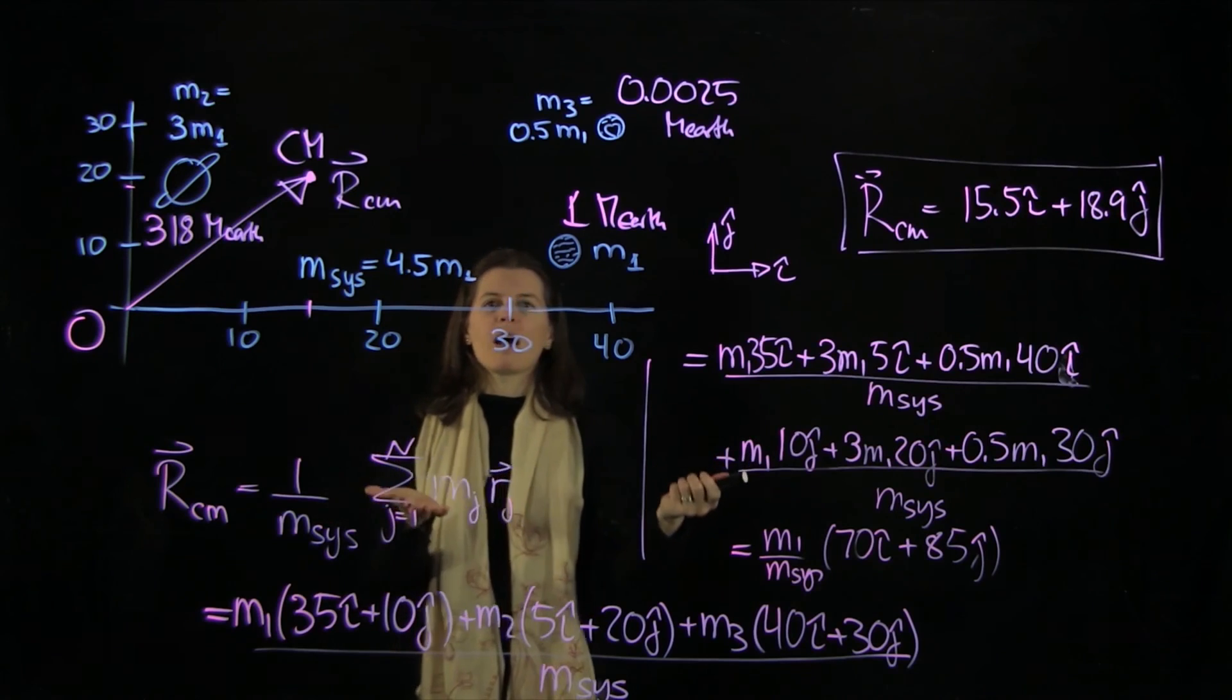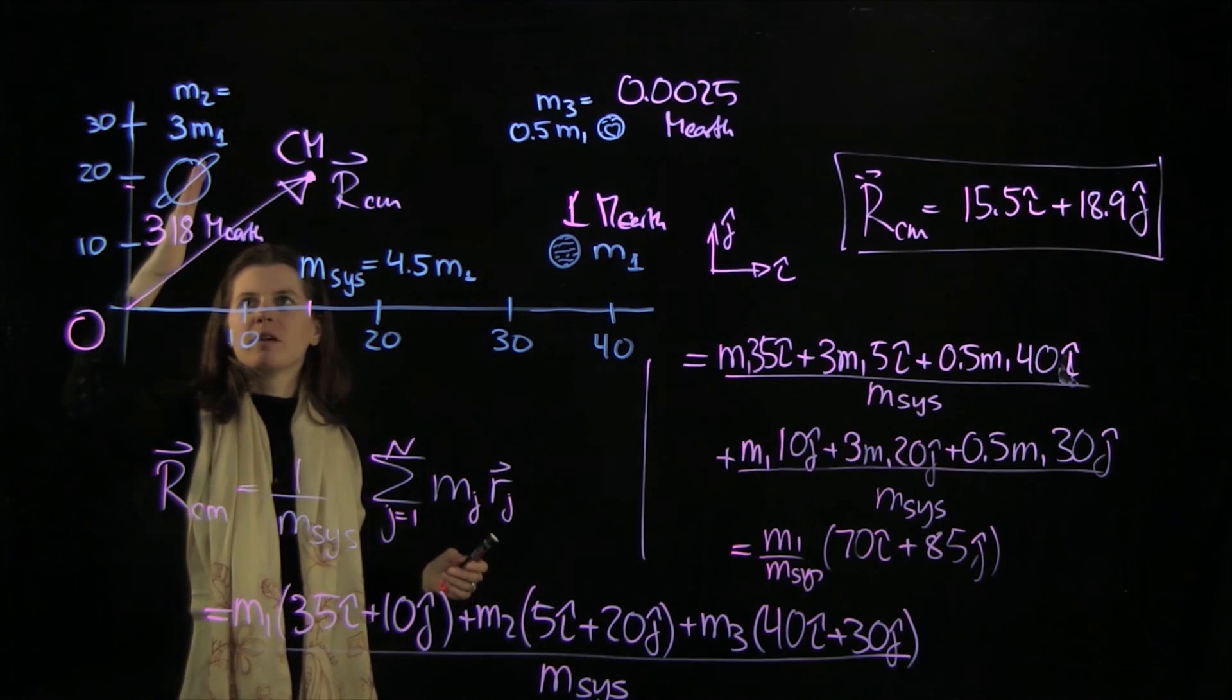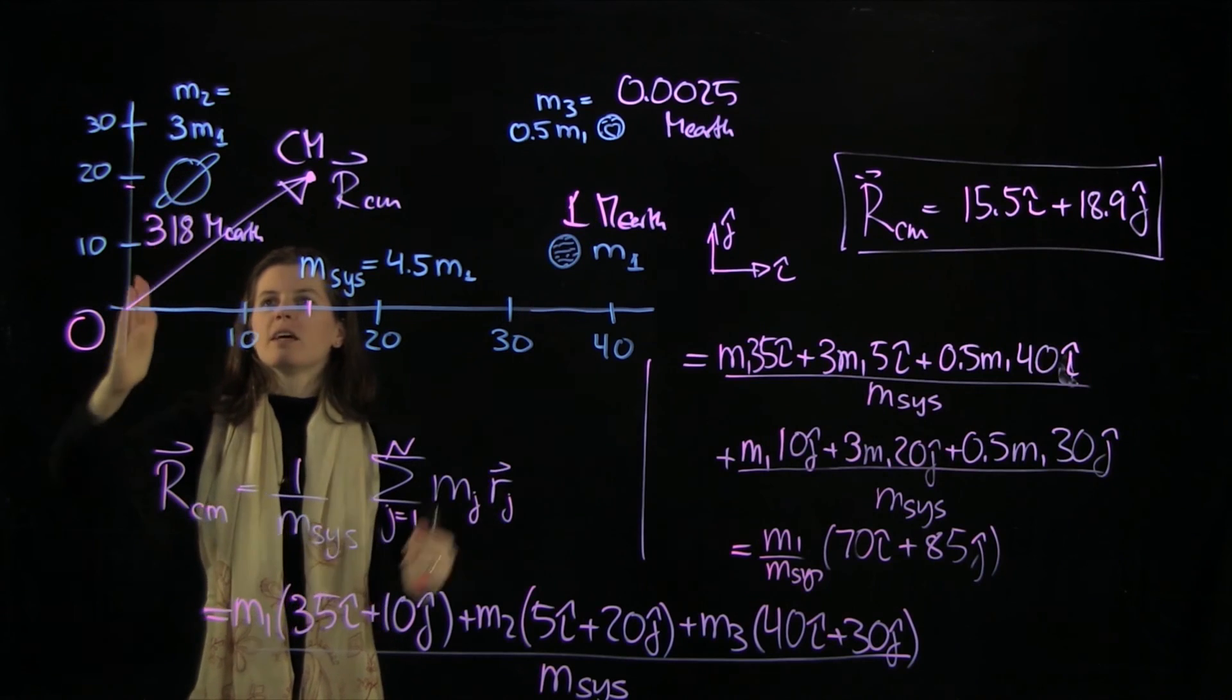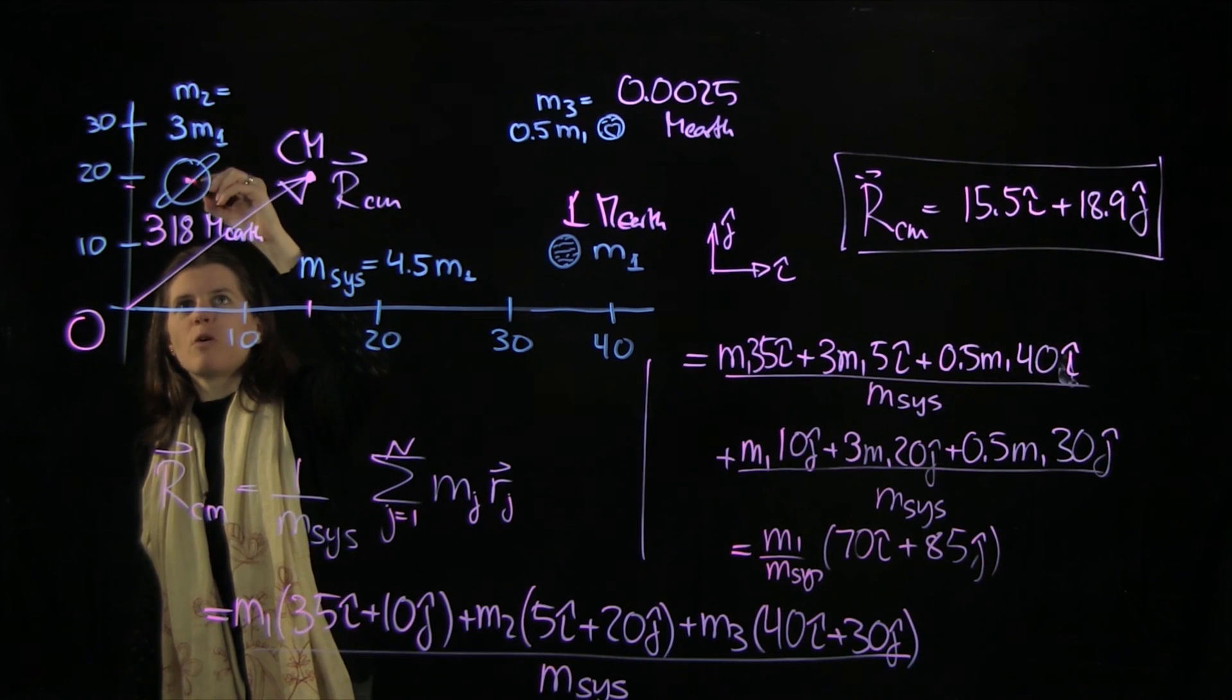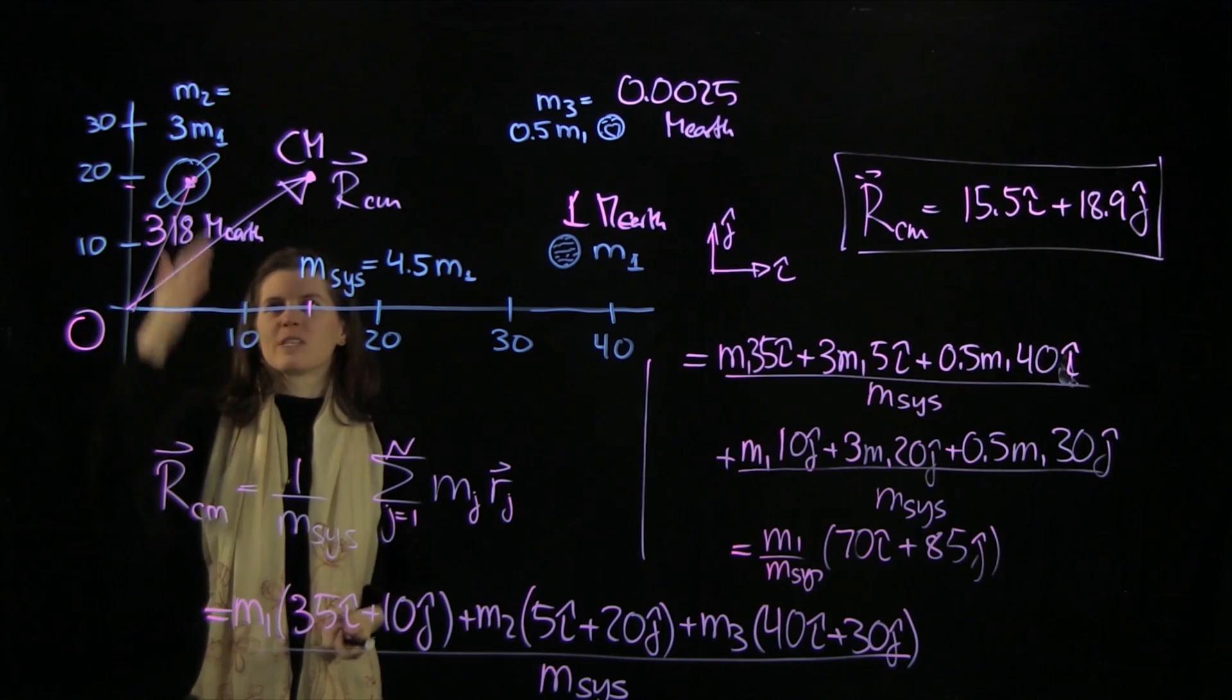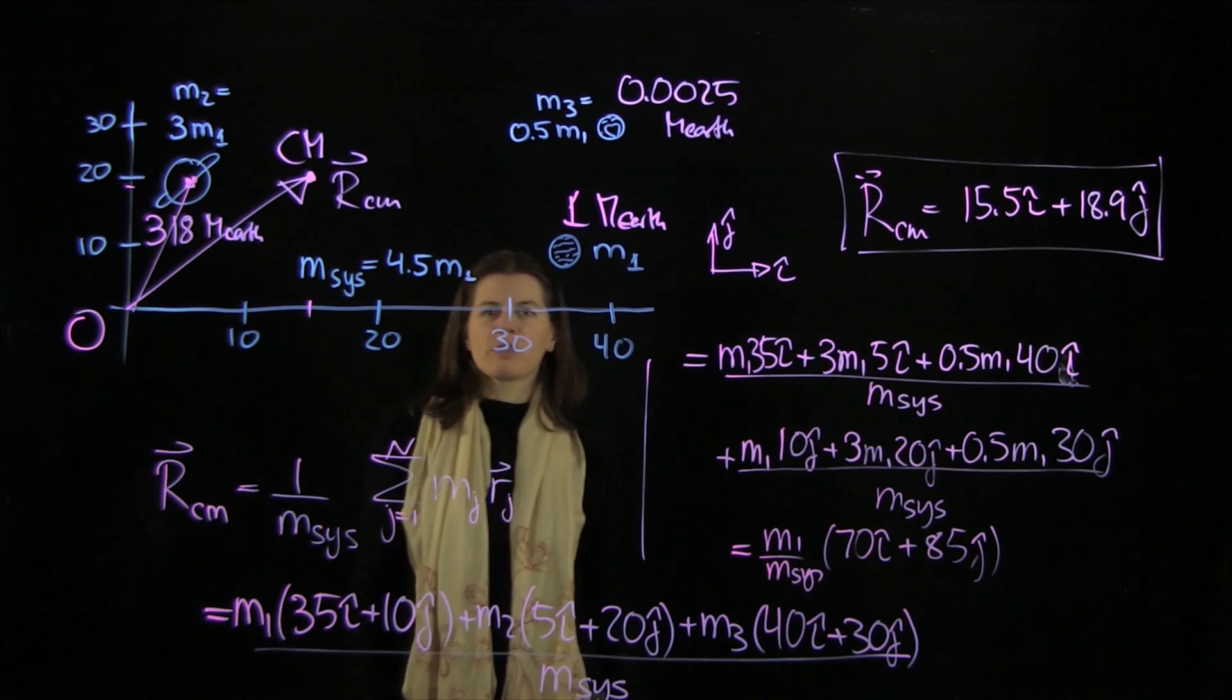You will see that Saturn really holds all the weight. If we were to do this calculation with these numbers here, then our rcm, keeping this coordinate system and the arrangement of the planets, would go right next to the center, right over here, because Saturn just weighs so much more than Pluto and Earth together.